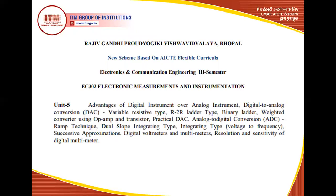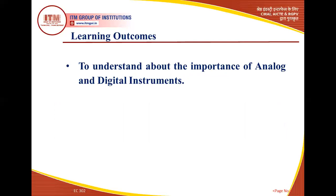The next unit covers the conversion techniques of digital-to-analog and analog-to-digital conversions — what methods are used and how they are done, including digital voltmeters. The overall outcome of this unit is that we will understand and properly use analog and digital instruments which are used for measurement.